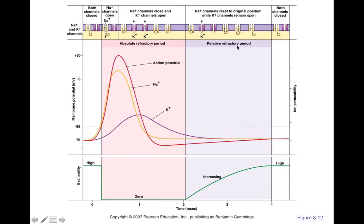Then we have a relative refractory period. It's called 'relative' because our voltage is still more negative than resting voltage. Although it's possible to generate another action potential, it's just relatively more difficult to get there — you might not get an action potential as easily as when you're at resting voltage. This is actually after the voltage-gated sodium channels have started to reset, and as they reset, the excitability of our cell increases until we get high excitability near resting voltage — only needing about 15 millivolts increase to reach threshold.